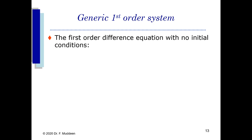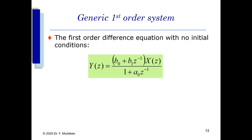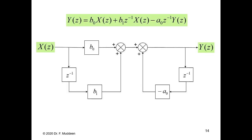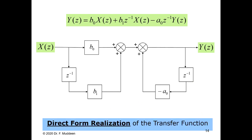A generic first-order system with no initial conditions follows a standard form, with inputs mapped to the left-hand side and outputs to the right-hand side, with delays stacked. This z⁻¹ level is the first delay; a z⁻² delay would be added underneath. This form is also referred to as direct form realization. Pay particular attention to this first-order block diagram, because we'll come back to it shortly.